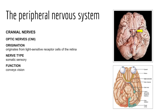Cranial nerve two is the optic nerve. The optic nerves arise from the retinas, pass through their respective optic canals, converge and partially cross over at the optic chiasma, and the optic tract travels to the thalamus before being routed to the primary visual cortex. Like the olfactory nerve, the optic nerves are purely sensory, providing our ability to see.